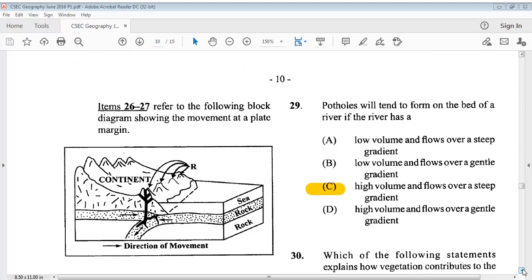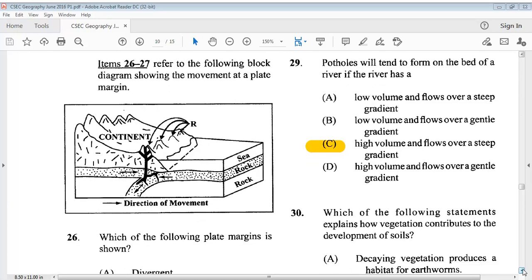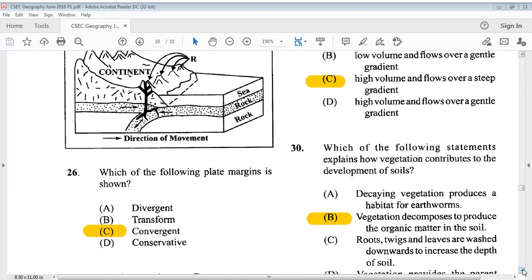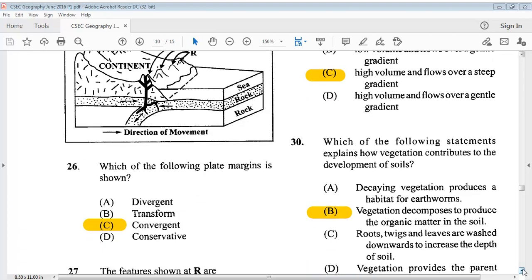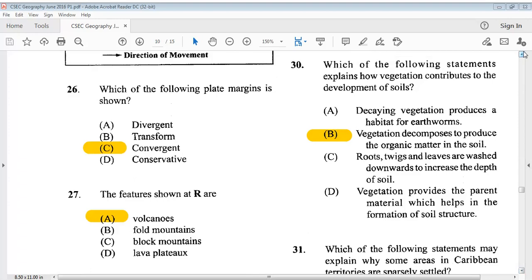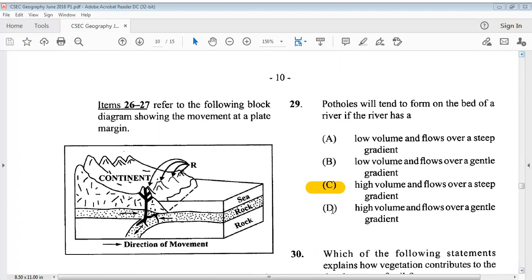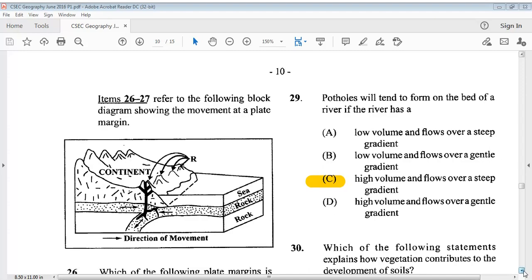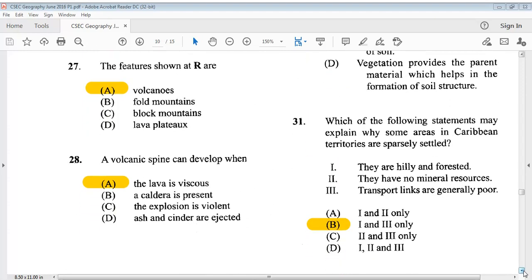Items 26 to 27 refer to the following block diagram, showing the movement at a plate margin. Which of the following plate margins is shown? The answer is C, convergent. Question 27 says, the features shown at R are? The answer is A, volcanoes. You can always scroll back to look at R. Question 28 says, a volcanic spine can develop when? The answer is A, the lava is viscous.